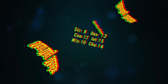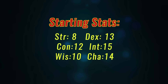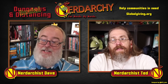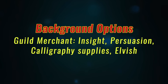This character is going to be very heavily invested in the mental stats. For strength we have 8, dex 13, con 12, 15 intelligence, 10 wisdom, and 14 charisma. Since we're playing a Yuan-ti, they get a plus one to intelligence and plus two to charisma, bumping both up to 16. Our race is Yuan-ti, our background we decided to go with guild merchant. From that we're going to get insight, persuasion, and a couple of choices — we're going to take calligraphy supplies as well as the ability to speak Elvish.